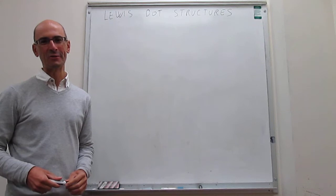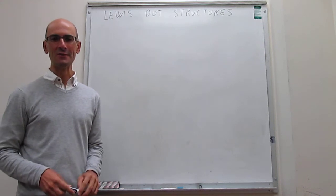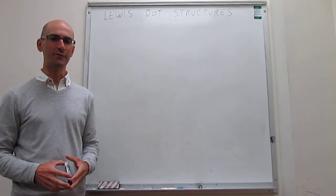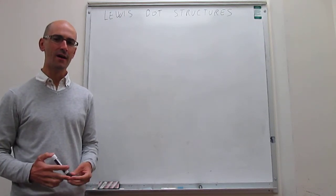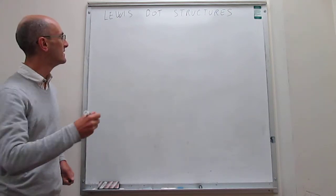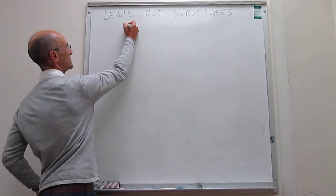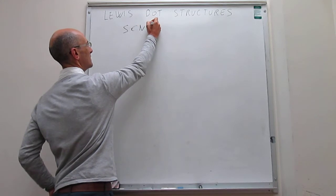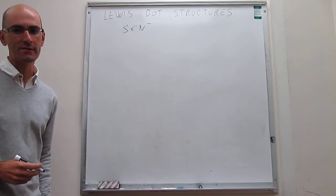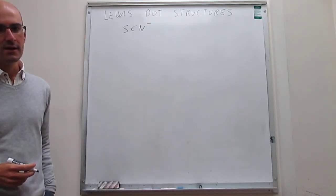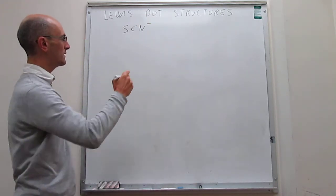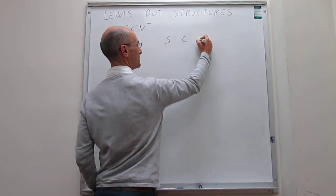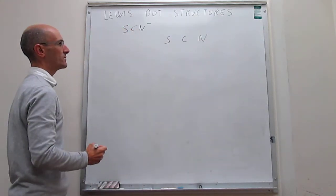In this video we continue our survey of Lewis dot structures by drawing the structure of the ion thiocyanate. That is the ion thiocyanate. As always, we count valence electrons and then try to draw the Lewis dot structures.